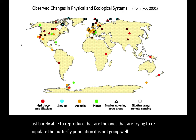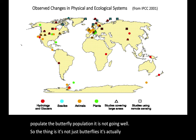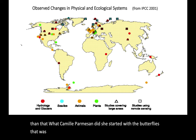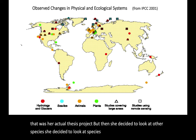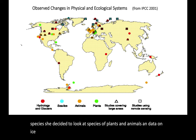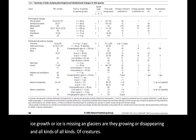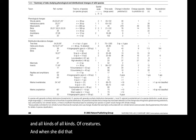It's not just butterflies — it's actually a much bigger story. What Camille Parmesan did: she started with the butterflies as her actual thesis project, but then she decided to look at other species — plants, animals, data on ice, whether glaciers are growing or disappearing. And when she did that, what she found was this: one of the saddest tables you'll probably ever see.